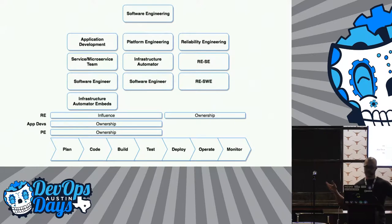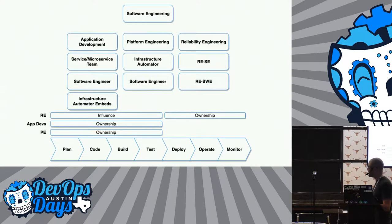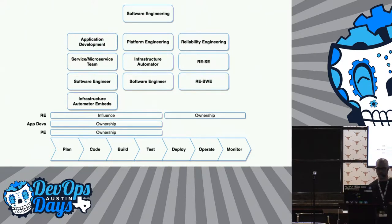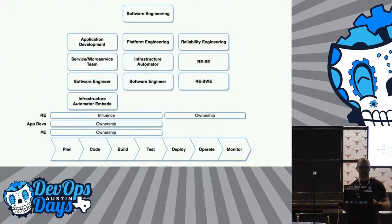This is my mock organizational structure and SDLC. You have application development going on that all falls under this software engineering house, with platform engineering and reliability engineering. Application development gets thrown in with software engineers. You have infrastructure automators in there that are kind of like embeds from your platform engineering team. In platform engineering, you have software engineers as well as infrastructure automators.